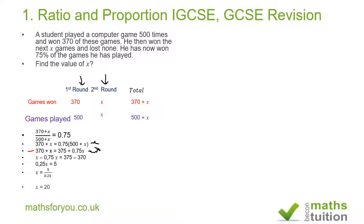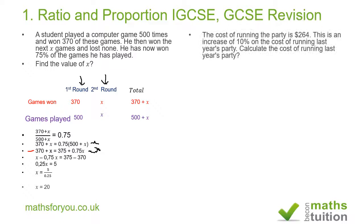Next question. The cost of running a party this year is $264. This is an increase of 10% on the cost of running the same party last year. We need to calculate the cost of running last year's party.